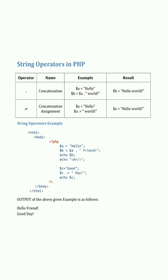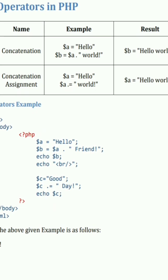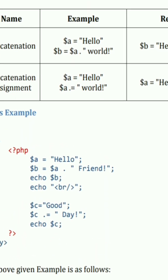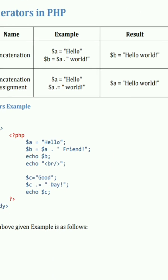The concatenation operator is used to combine two or more strings. For example, here as you can see, the variable 'a' contains the word 'hello'. We have concatenated variable 'a' with the string 'world' using the dot operator. After this concatenation, the result becomes 'hello world' and it is stored in variable 'b'. On the right side you can see the result.